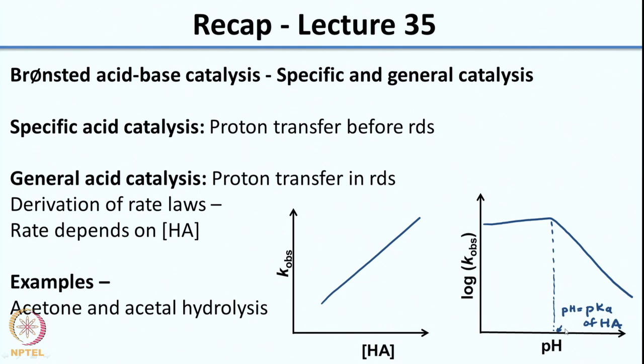If you look at the dependence with pH, what you would see is that it would remain constant for a while and then you would observe a dip in the log K value. That dip would be seen at the point corresponding to the pKa of the acid HA, because when you cross the pKa you would have more dissociation of the acid and hence a smaller concentration of HA. We also looked at examples of acetone and acetal hydrolysis — in acetone we looked at both specific and general catalysis, and in acetal only specific acid catalysis.